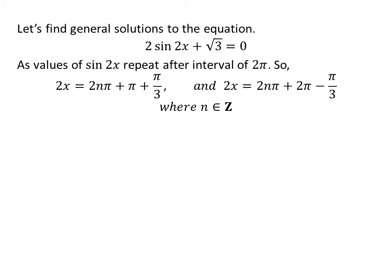Let us find the general solutions. Since the values of sine of 2x repeat after an interval of 2 times pi, the general solutions are: 2x is equal to 2n times pi plus pi plus pi upon 3, and 2x is equal to 2n times pi plus 2 times pi minus pi upon 3, where n is an integer.